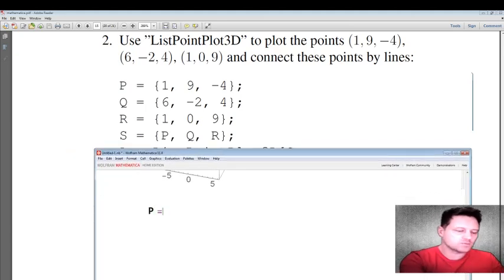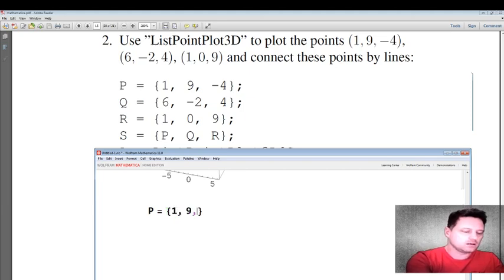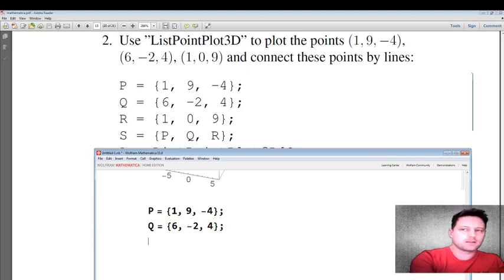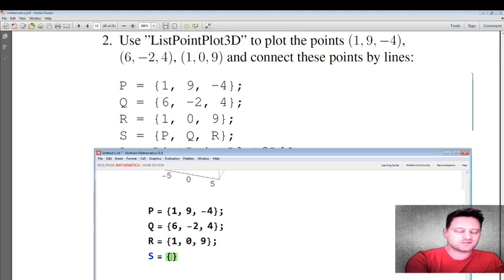Okay, so we can enter it exactly like what we have here. So I'll put P equals 1, 9, minus 4. Q equals 6, minus 2, 4. R equals 1, 0, 9. S is equal to the collection of those points, P, Q, R.